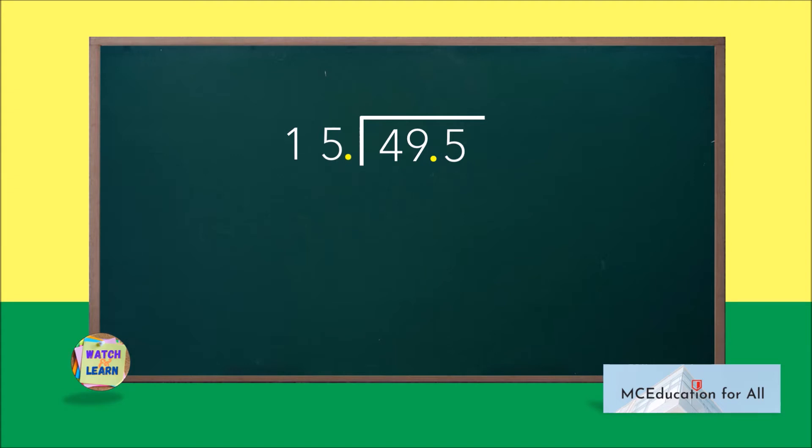Then move the decimal point in the dividend up to the same number of digits as you moved it in the divisor. Since we move one place for the divisor, we will move one place also for the dividend. This makes the dividend 495. Now divide the dividend by the divisor just like regular division.